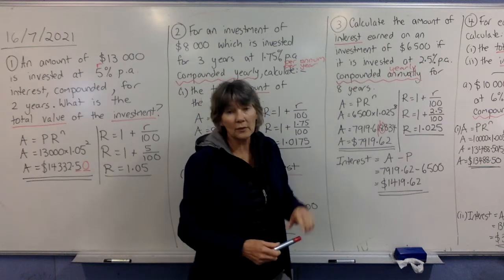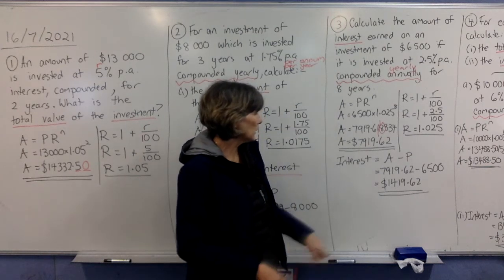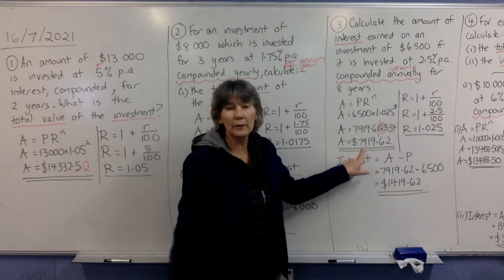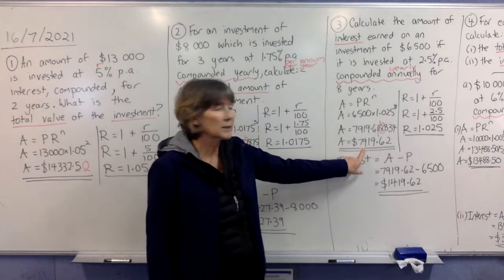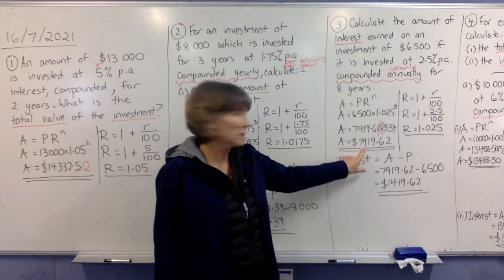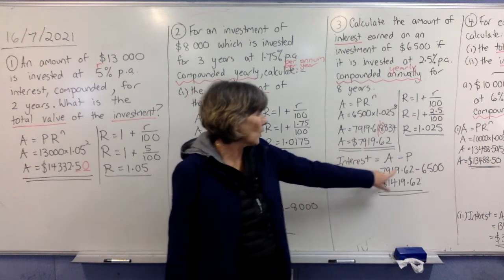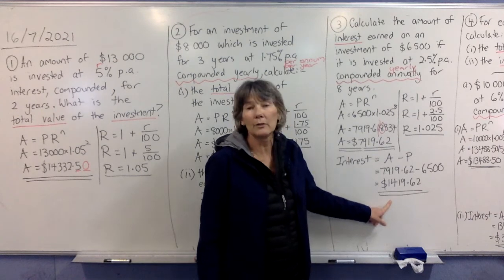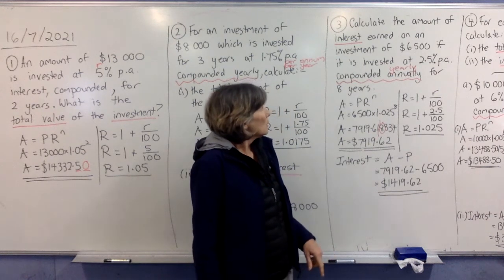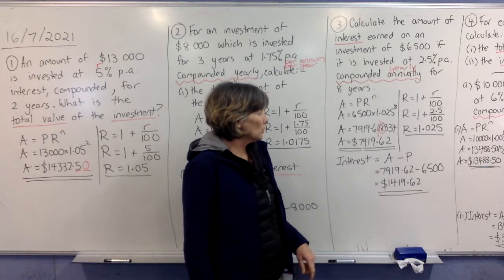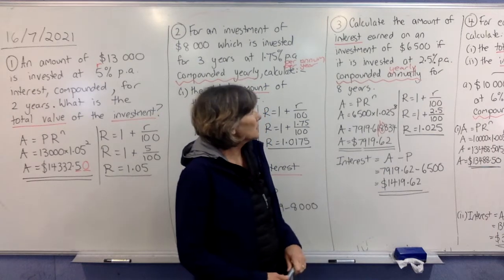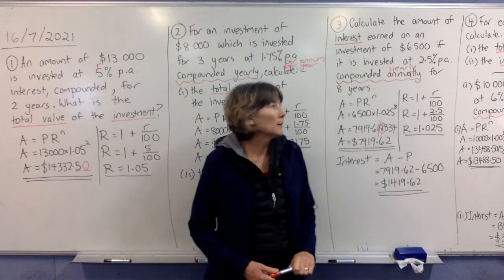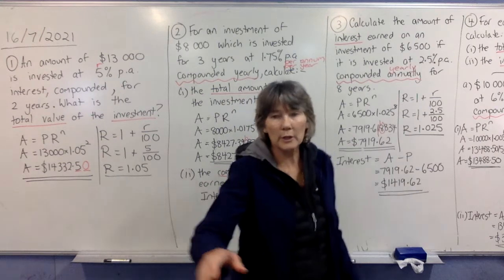So question asked for interest. So that's what we're going to do now. Our final value of our investment is $7,919.62. Take off what we originally invested, and all of that money you've got there is interest you earned. So you can see with compound interest, you do earn a fair bit of money. That's only a fairly low interest rate.